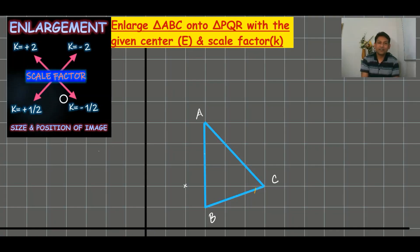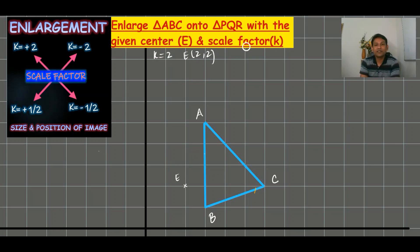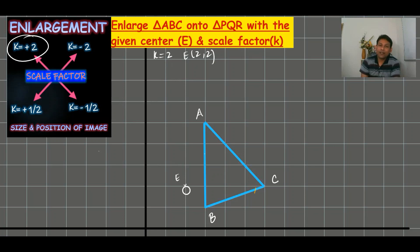I am doing the first case with scale factor plus two. The center I am using is two and two. The question is: enlarge ABC onto PQR with center (2,2) and scale factor plus two. The method is: write the column vector from the center to A, then multiply with the scale factor. This is a very simple method — we don't need to use a compass.